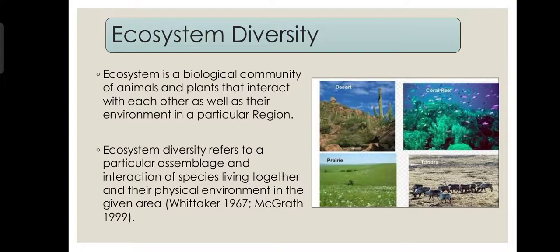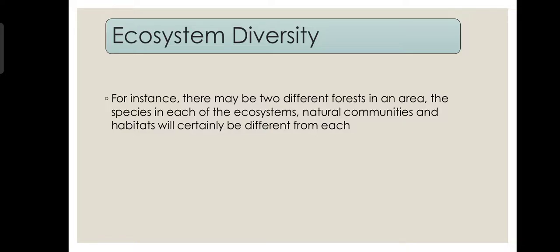Ecosystem diversity: there are different types of ecosystems like desert ecosystem, tundra, coral reef, prairies, etc. All ecosystems are diverse from each other. If two forests in the same area are present, the species of those forests will certainly be different.